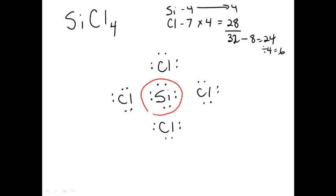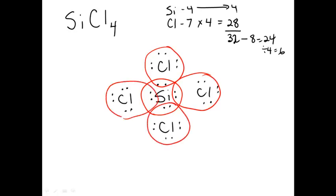In this scenario, the silicon feels like it has 8. Each of the chlorines feel like they have 8. We've drawn this one correctly as well. Here's the simpler way to draw it.